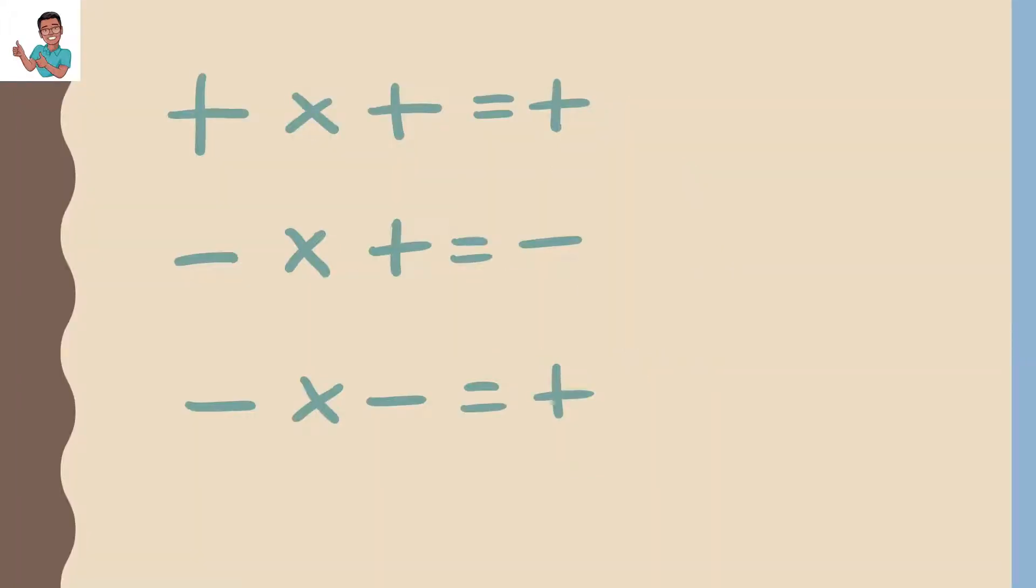Plus times plus gives plus. 2 times 2 gives 4. Minus times plus gives minus. Minus 2 times 2 gives minus 4. Minus times minus gives plus. Minus 2 times minus 2 gives 4.